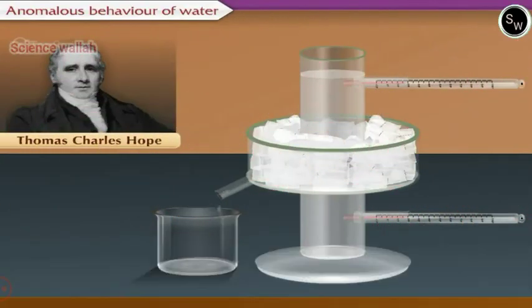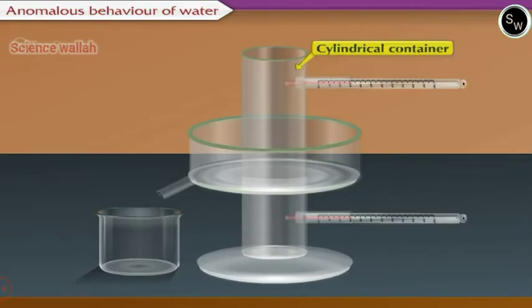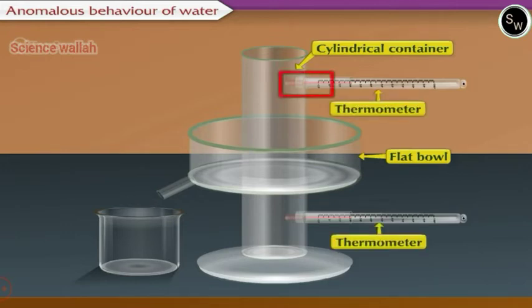The anomalous behavior of water can be studied using Hope's apparatus. Hope's apparatus consists of a cylindrical container having its central part surrounded by a flat bowl. A provision is made on the cylindrical container to introduce two thermometers above and below the flat bowl.